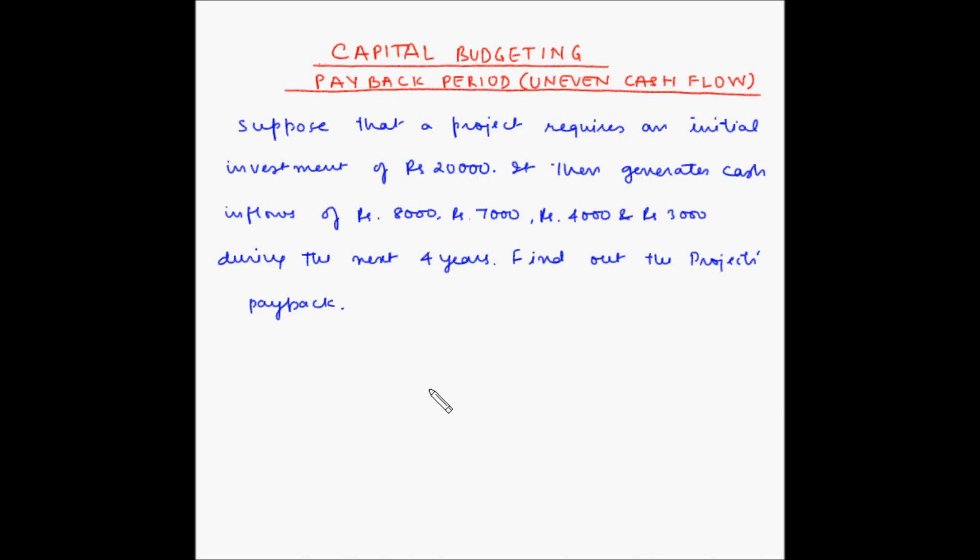Suppose that a project requires an initial investment of rupees 20,000. It then generates cash inflows of rupees 8,000, rupees 7,000, rupees 4,000 and rupees 3,000 during the next four years. Find out the project's payback.